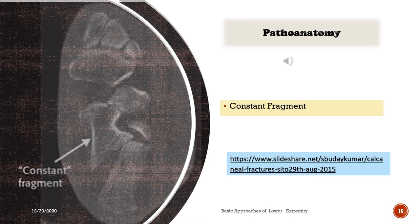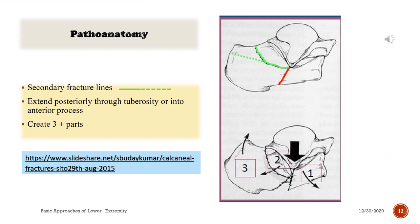Patho anatomy — the constant fragment. Notice the CT. Secondary fracture lines follow the green line and extend posteriorly through the tuberosity or into the anterior process, creating three parts.